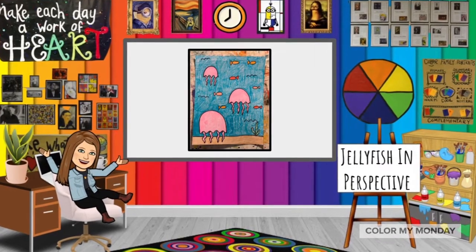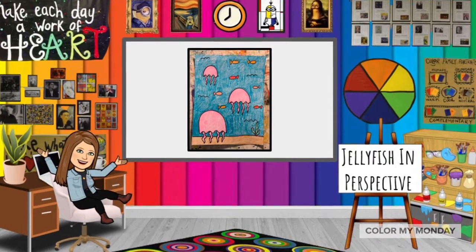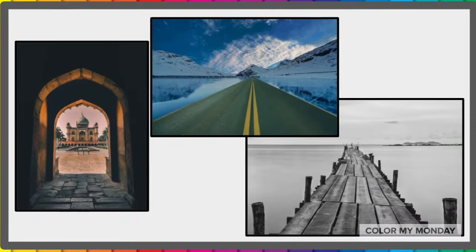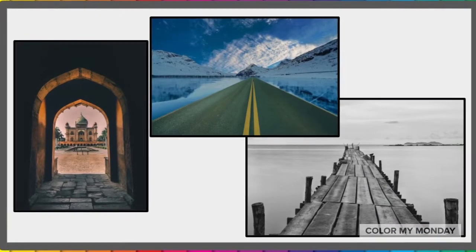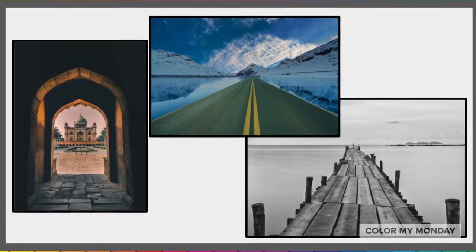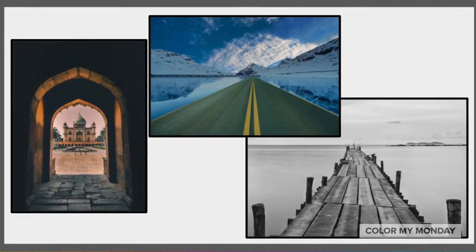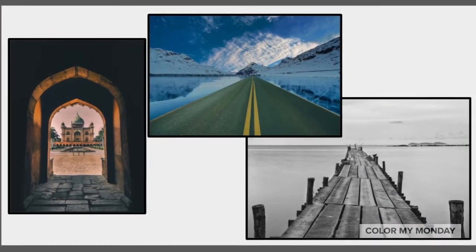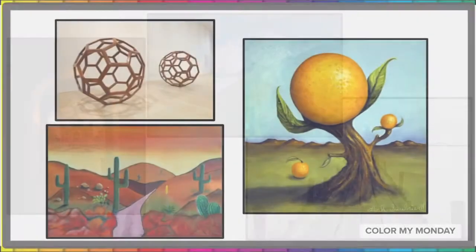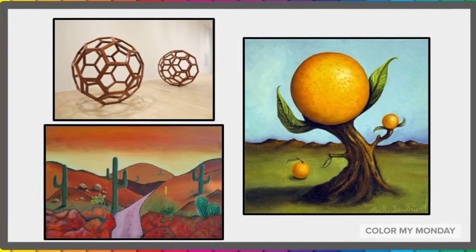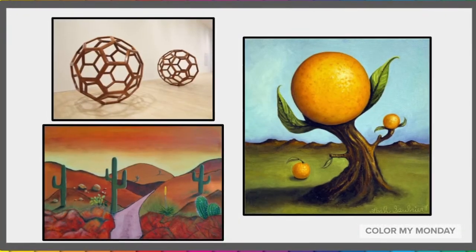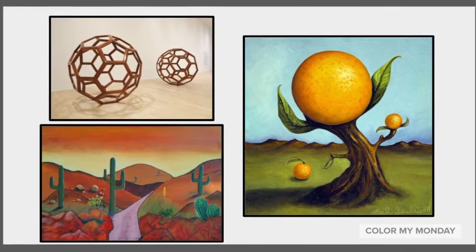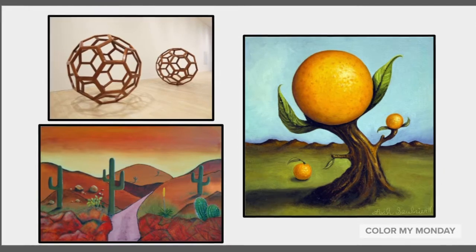Today we'll draw jellyfish in perspective. Perspective is a way of creating the illusion of depth on a two-dimensional surface. We create this illusion by changing the size of the objects we draw.